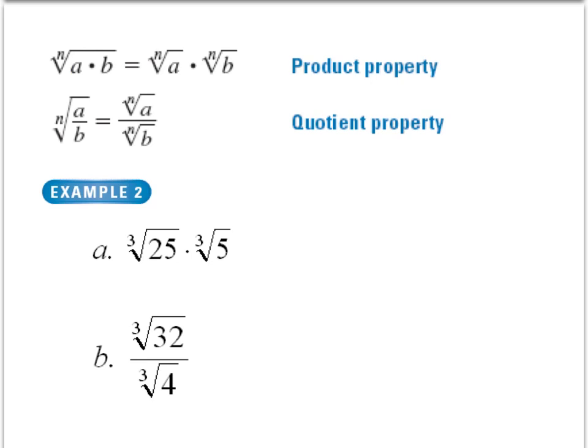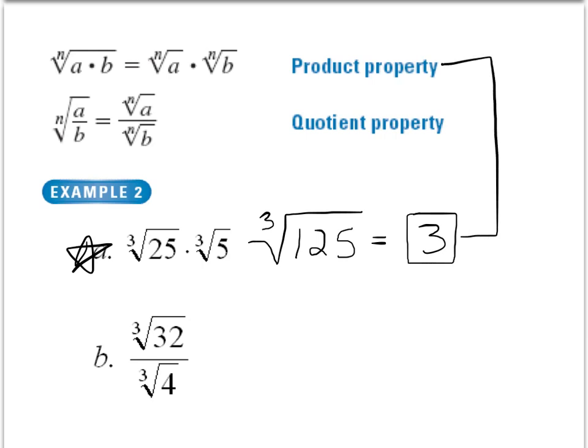Two properties that we want to learn in this section are the product property and the quotient property. The product property allows us to take the product of a term under the radical symbol and either combine them or separate them. Here what I want to do is I want to combine these two for exercise A. I know 25 times 5 is 125. I know the perfect cube root of 125 is just 3.